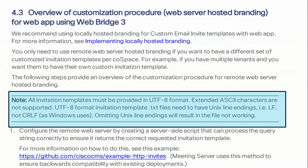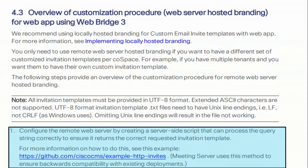All invitation templates must be provided in UTF-8 format. Extended ASCII characters are not supported. The UTF-8 format invitation_template.txt file needs to have a UNIX line ending of LF, not CRLF like in Windows. Omitting the UNIX line ending will result in the file not working. To configure the remote web server, you create a server-side script that can produce the query string correctly to ensure it returns the requested invitation template.